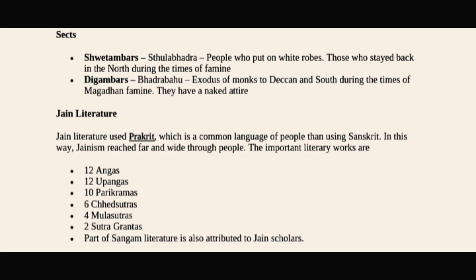The second Jain Council was held at Vallabhi in 512 AD, during which the final compilation of 12 Angas and 12 Upangas was completed.